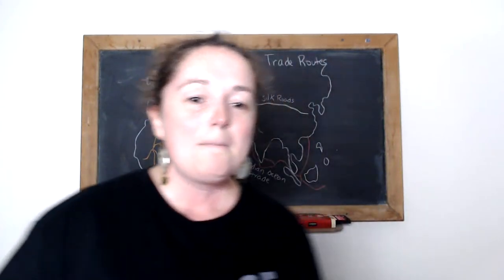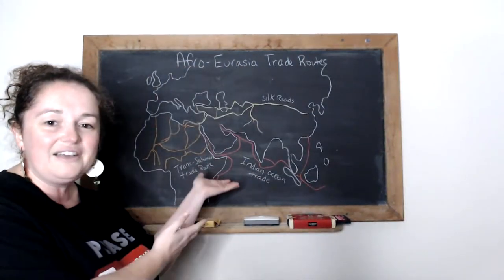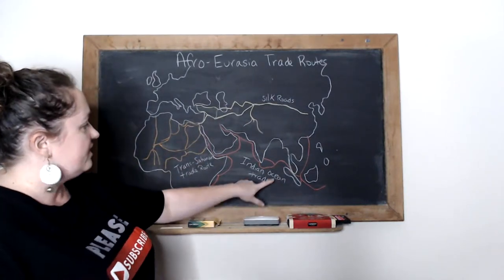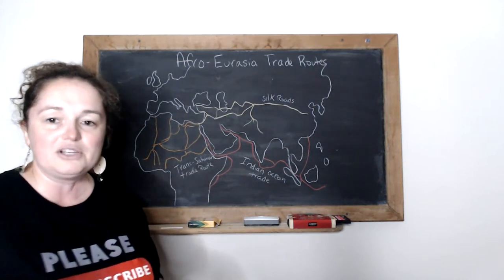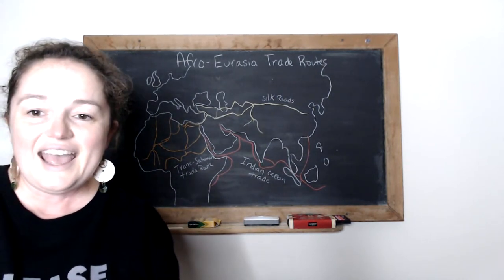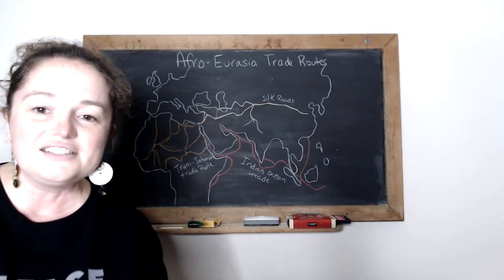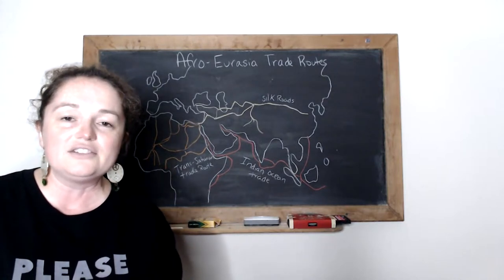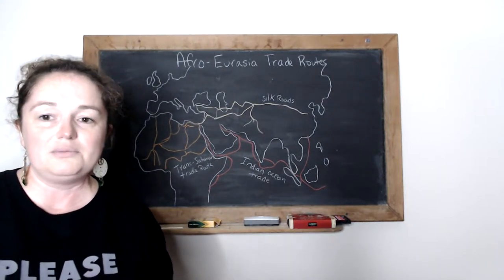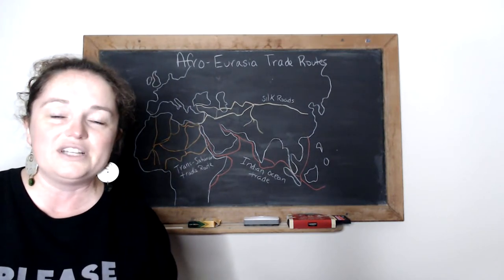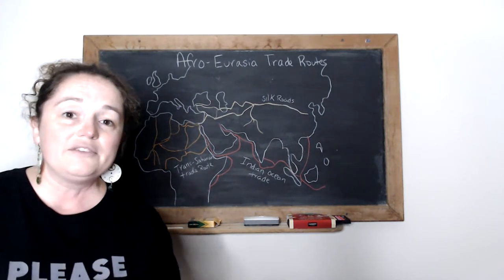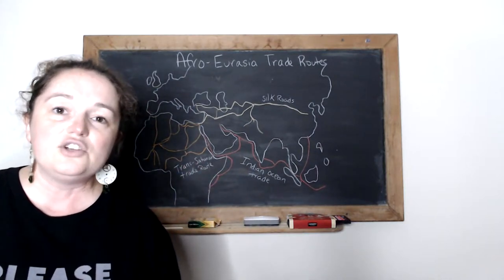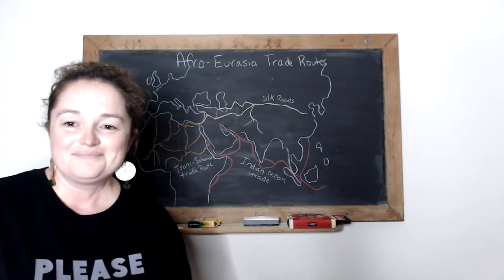Behind me I have a lovely map with the Silk Roads, the Indian Ocean trade route, and the Trans-Saharan trade routes — make sure you mark those on your notes. This is not a test review; it's a quick review of things from Unit 2 including trade routes and how to write an essay. We'll get started in a little bit while I'm waiting for people to join.